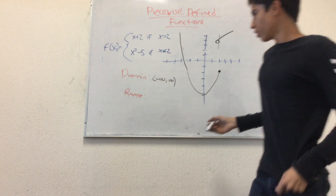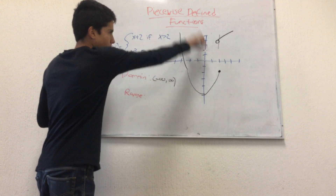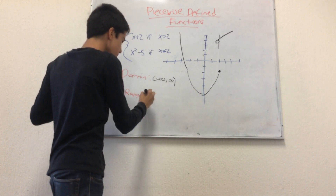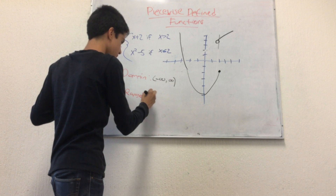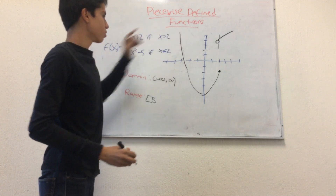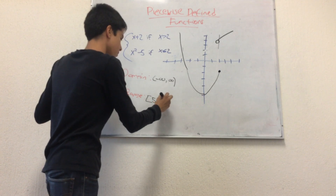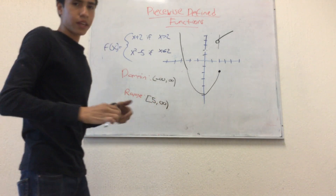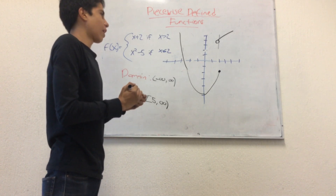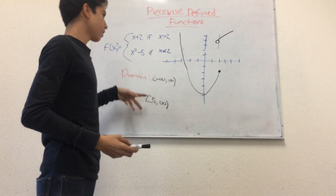For the range we need to see the y values. It goes from minus 5 all the way to infinity. So now we have all the things we need for our graph: the graph itself, the domain, and the range.